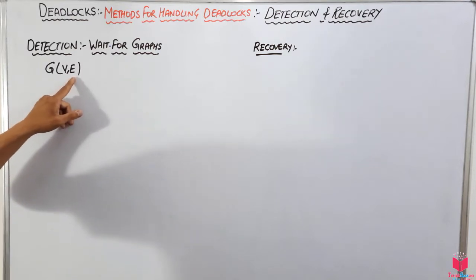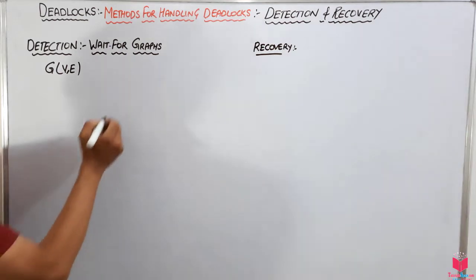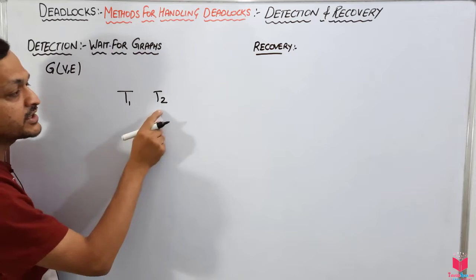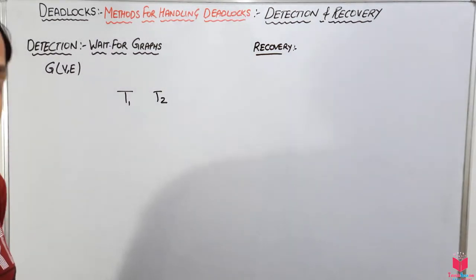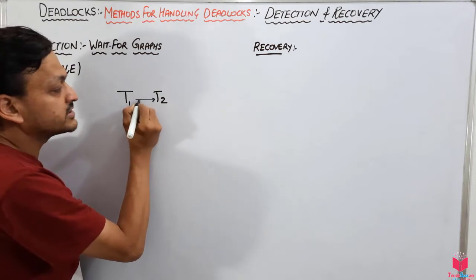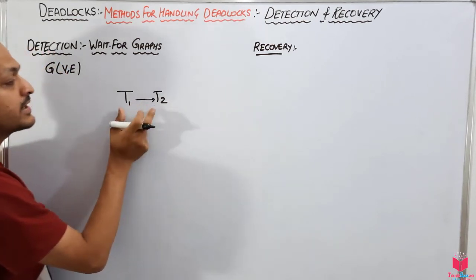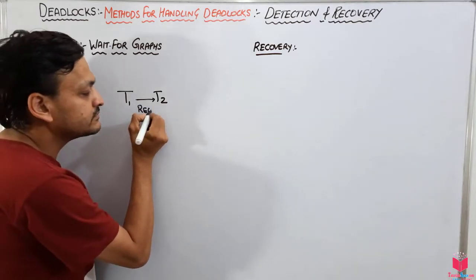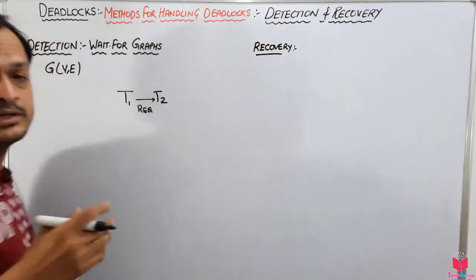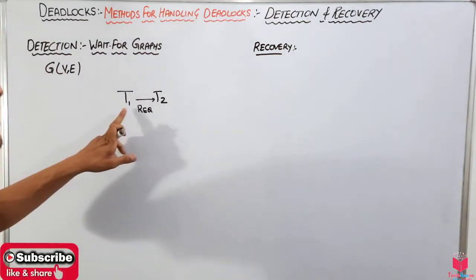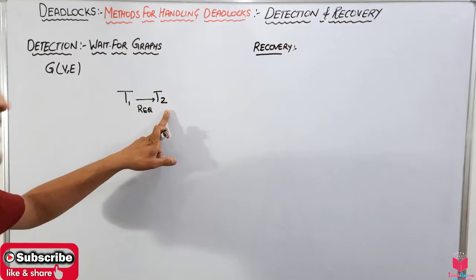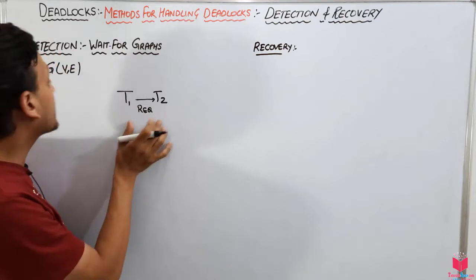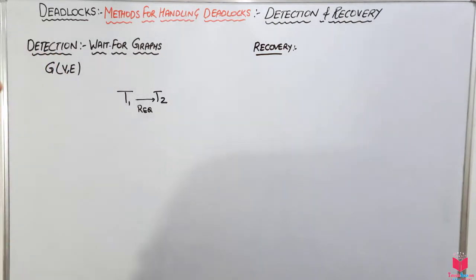How can we use these vertices and edges in the transaction order in a system? Suppose there are two transactions, T1 and T2. T1 and T2 are the vertices of this graph. If we put an arrow — an edge — from T1 to T2, this edge says that T1 is requesting T2 to release its resources, because T1 needs those resources to complete its work.